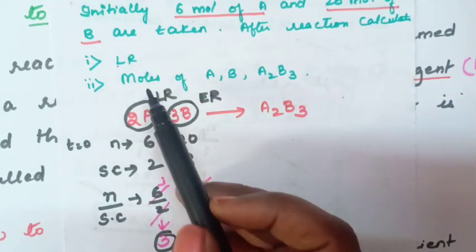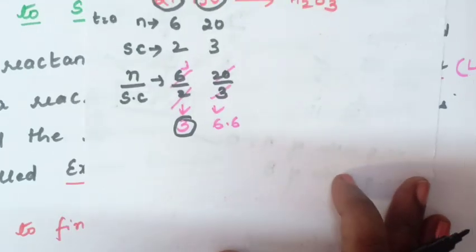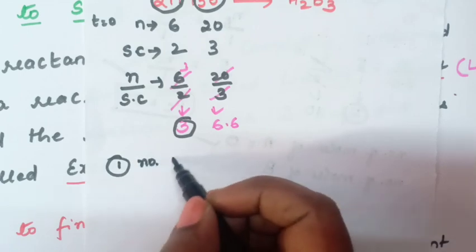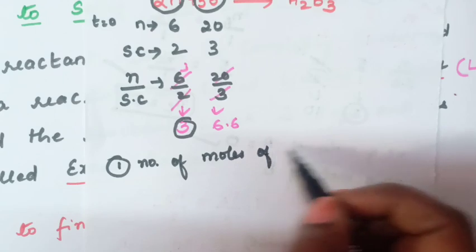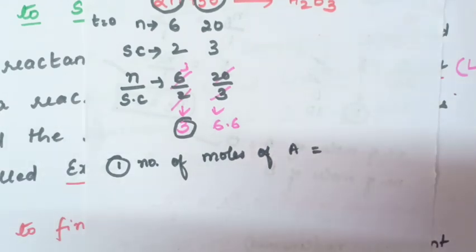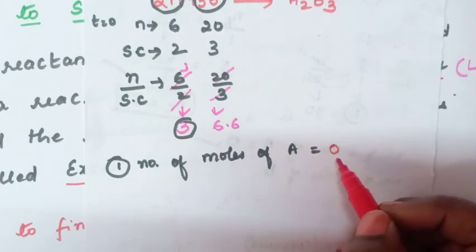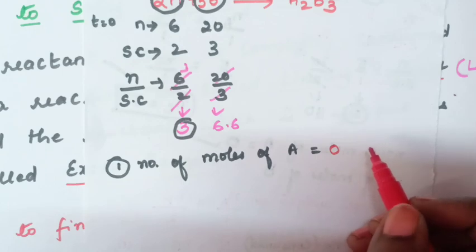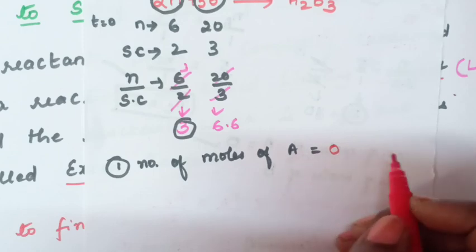Now find the number of moles of A, B, and A₂B₃. Number of moles of A: since A is the limiting reagent, it will be fully consumed during the reaction and fully converted into product. Therefore, the number of moles of A at the end of the reaction will be 0.